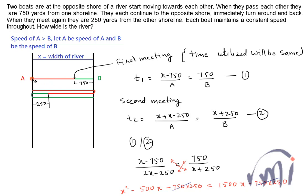Suppose we have boat A over here and we have boat B over here. Both of them start moving towards each other. Let's assume that the speed of A is more than the speed of B. They will meet close to B and the distance from this point to this shore is 750 yards.